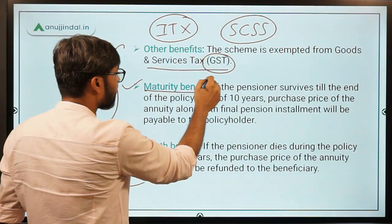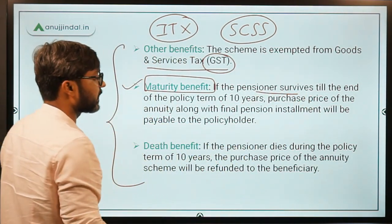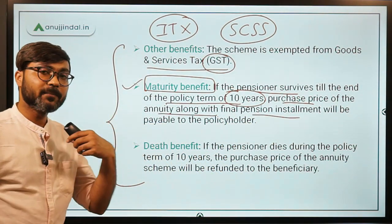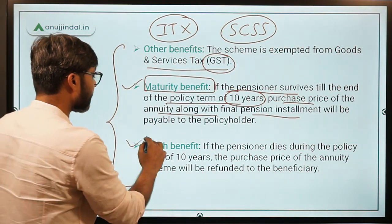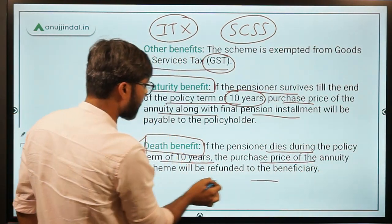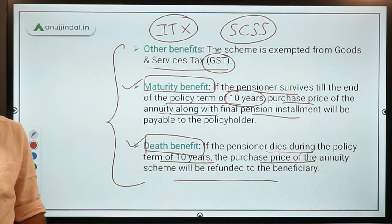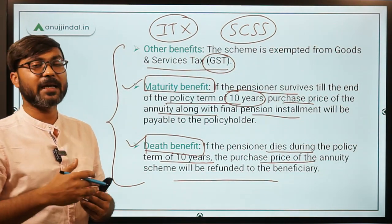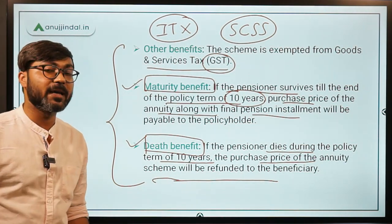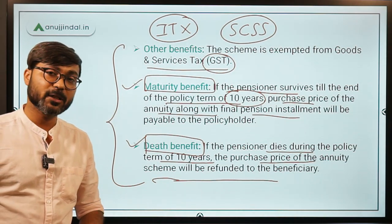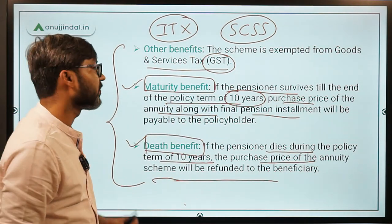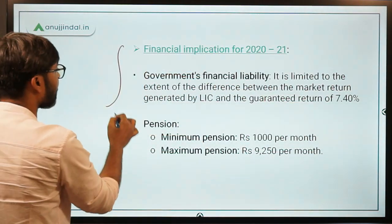The maturity benefit is: if the pensioner survives till the end of the 10-year policy term, then the purchase price of the annuity along with the final pension installment will be provided. The death benefit is: if the pensioner dies during the 10-year policy term, the purchase price of the annuity will be refunded to the beneficiary. The pension will stop, and unlike some other schemes, the spouse does not continue to receive pension — only the purchase price is refunded to the beneficiary.